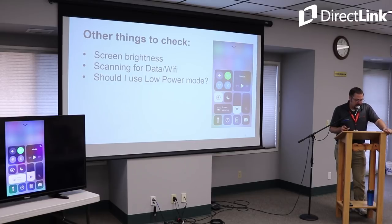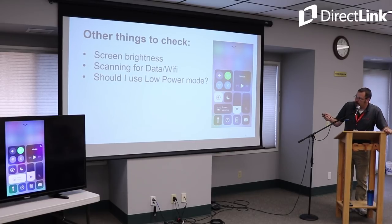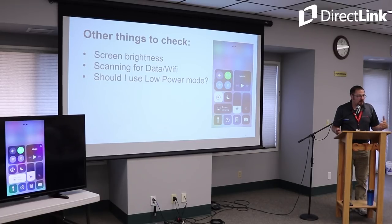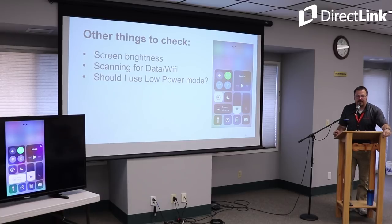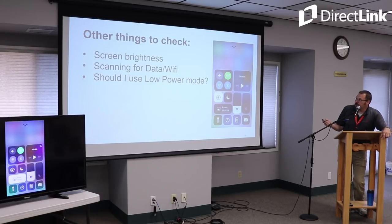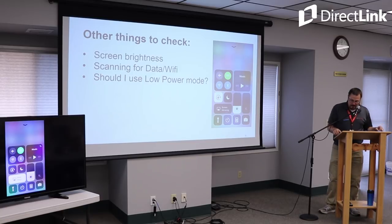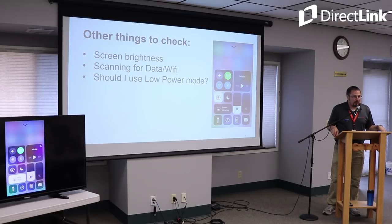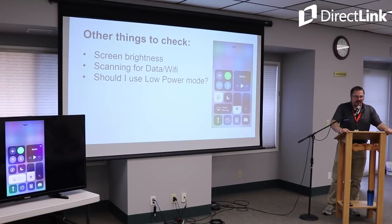We've got four icons up here. One looks like a little airplane. We have the wireless icon — you should have seen that in the upper corner when joining Wi-Fi. There's the cellular data icon, and underneath that, the Bluetooth icon. A quick trivia fact: the Bluetooth symbol is actually a combination of a couple of Nordic runes in honor of the guy who invented Bluetooth.